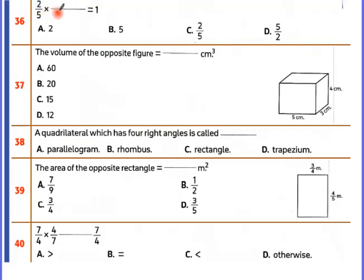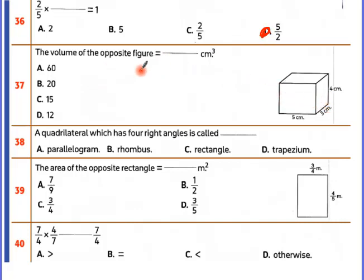2 over 5 times something equals 1. Since multiplying by the reciprocal gives 1, the answer is 5 over 2. For the volume of the opposite figure: length times width times height = 5 times 3 times 4. Five times 4 is 20, twenty times 3 is 60 centimeters cubed.